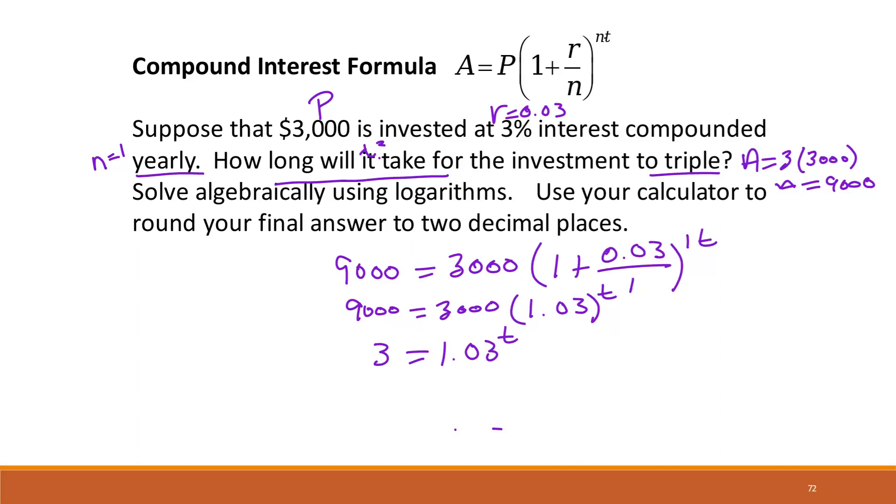So from here we can use our rule to change it to a log. So we get that t is equal to log base 1.03 of 3. So t is equal to log of 3 over log of 1.03 if you're using the change base formula.